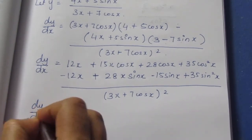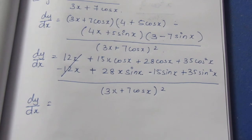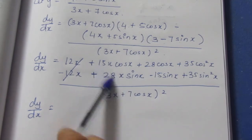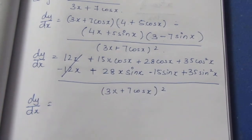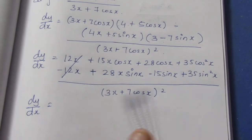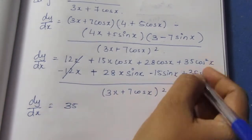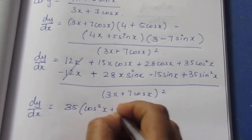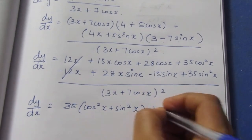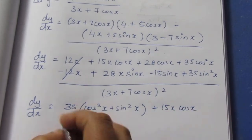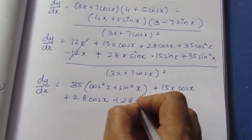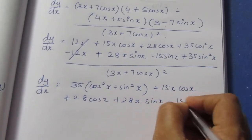Now dy/dx: like terms cancel — 12x minus 12x cancels. We collect remaining terms. Since cosx and sinx terms remain, we note that 35cos²x and 35sin²x can be grouped as 35(cos²x + sin²x). We also have 15x·cosx plus 28cosx plus 28x·sinx minus 15sinx.